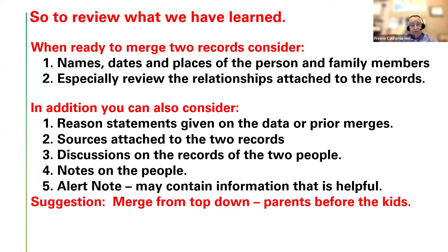One last suggestion: if you're going to merge a bunch of different records that all need to be merged — like a family where there are multiple copies of the parents and the children — don't start at the children's level. Start at the top with the parents, put the parents together even though that makes a mess of the children. Then go down through the children and systematically merge them together until you have the single family. It works a lot easier to do it from the top: parents first, then children.